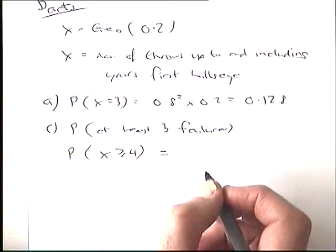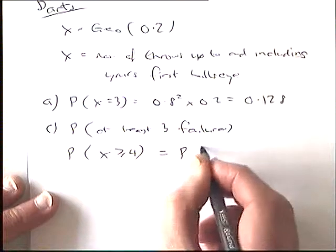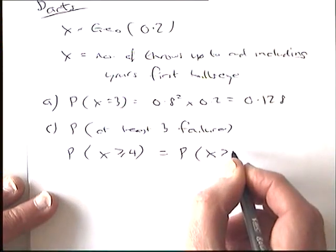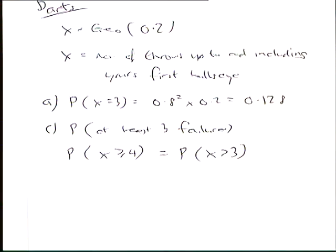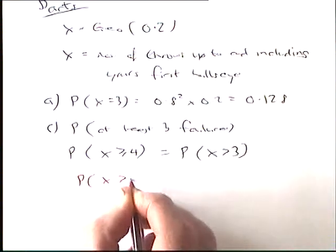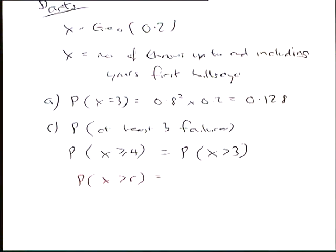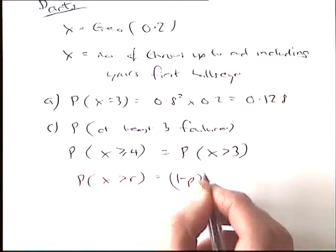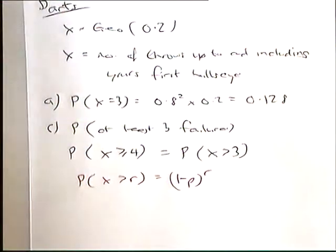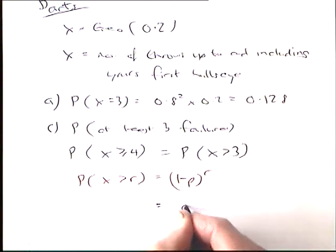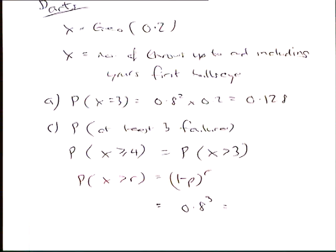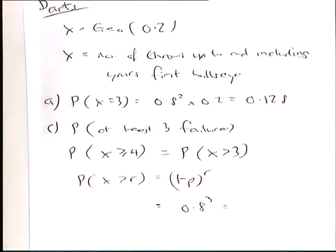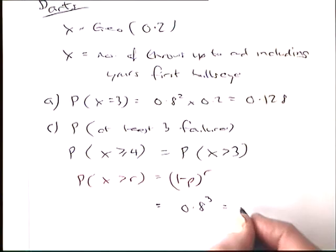Or what's another way of writing that down? X is greater than 3. Because if we write it down like that, we can use what we had earlier. What do we have for the probability X is greater than R? 1 minus P to the power of R. So in this question, 1 minus P is 0.8. R here is 3. So that's 0.64 times by 8. Anybody know the powers of 2? 0.512.